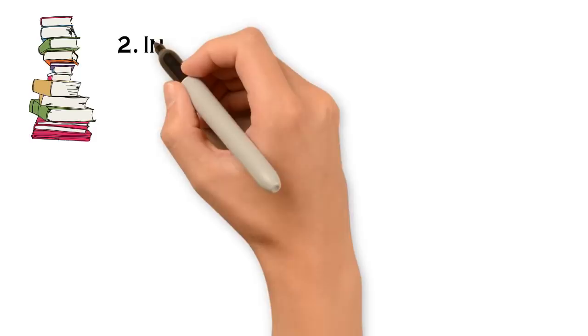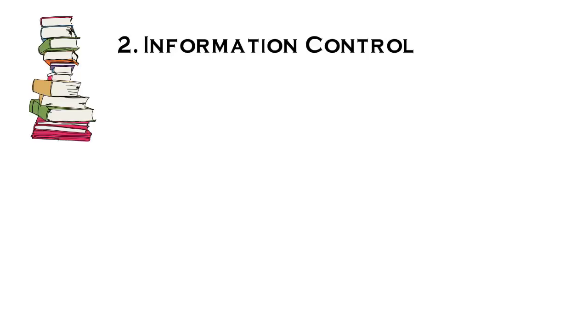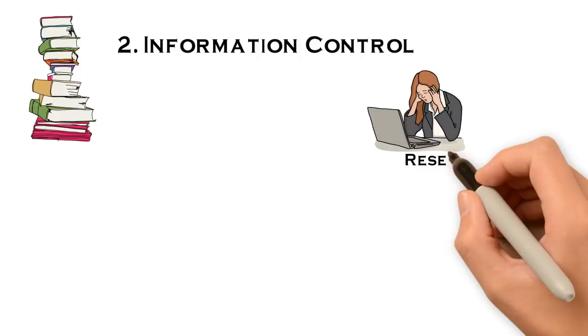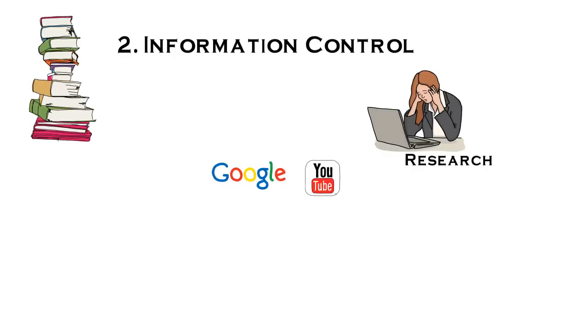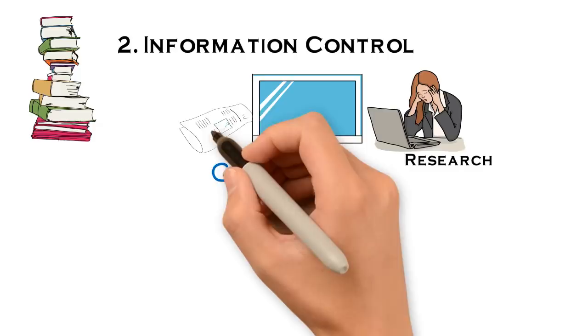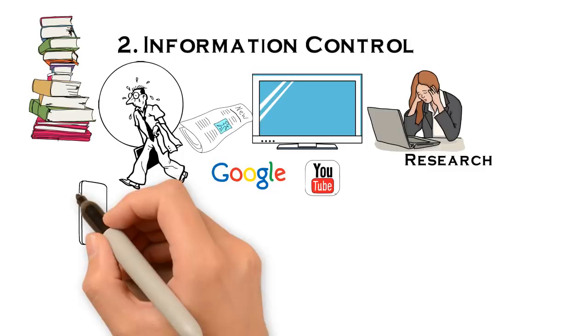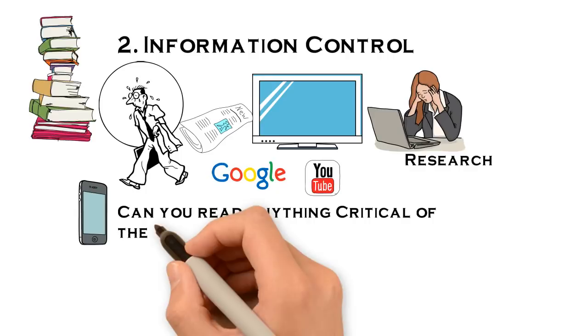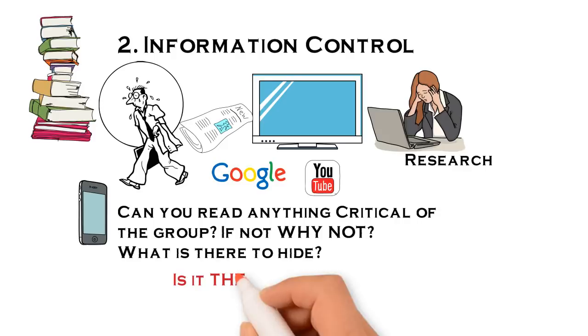Number two is Information Control, and this one's all about deception. Do they deliberately withhold information? Do they distort information and lie to you? Do they minimize or discourage access to information they haven't produced themselves—especially information on the internet, TV, radio, books, articles, newspapers that ex-members may have produced? In fact, anything critical of them? They might also keep you so busy you don't have time to think and investigate things. They could control you through modern phones, iPhones, iPads, cell phones with texting, calls, internet tracking. Do they break things down to 'them and us,' insider and outsider?